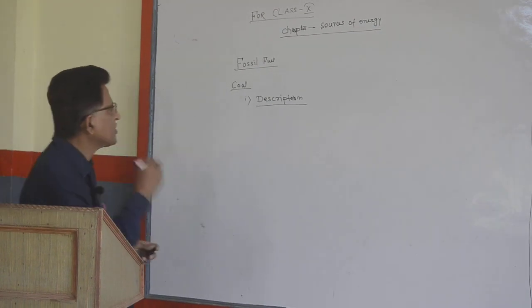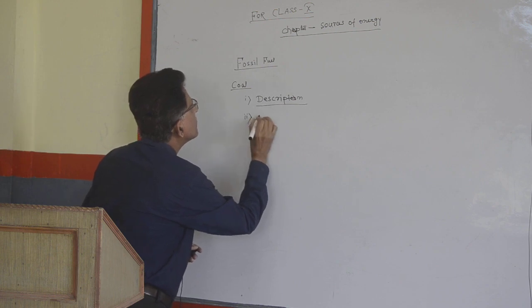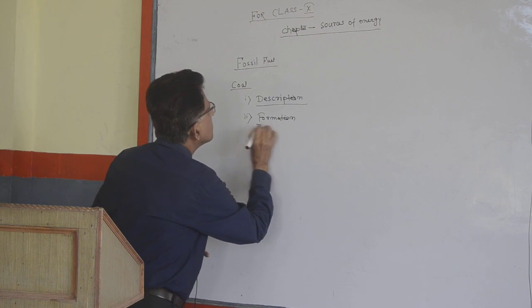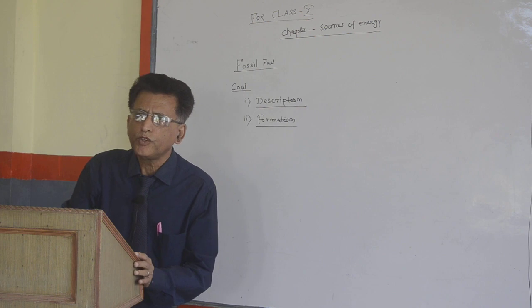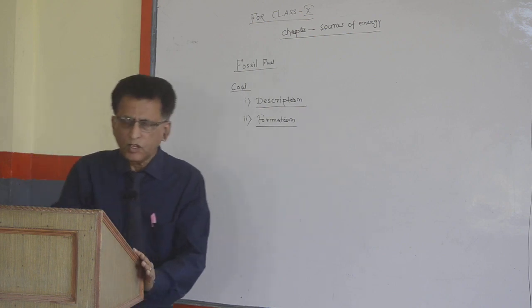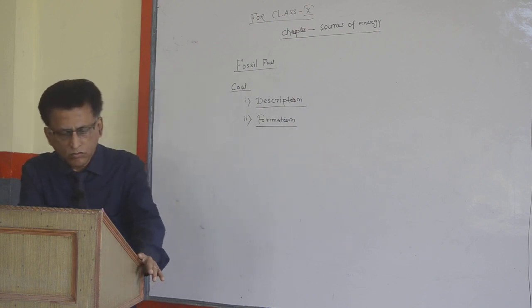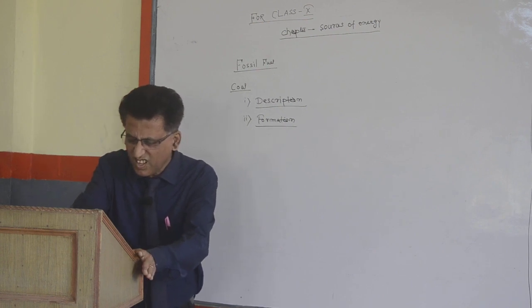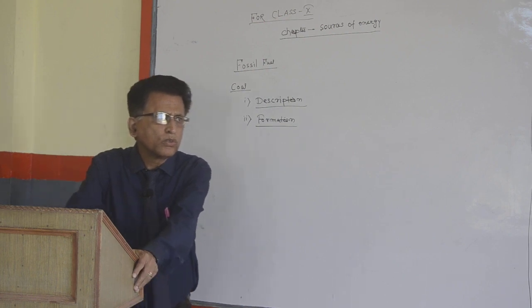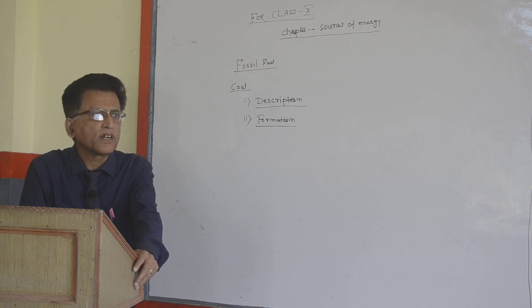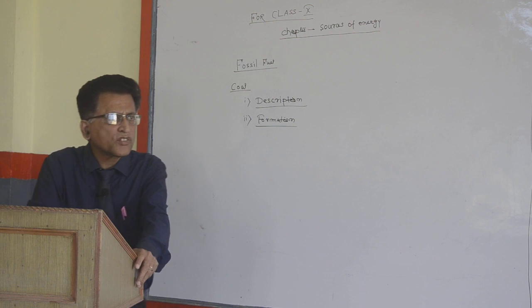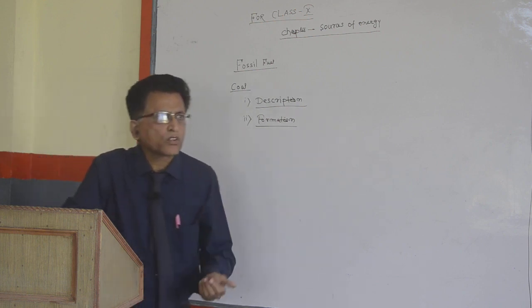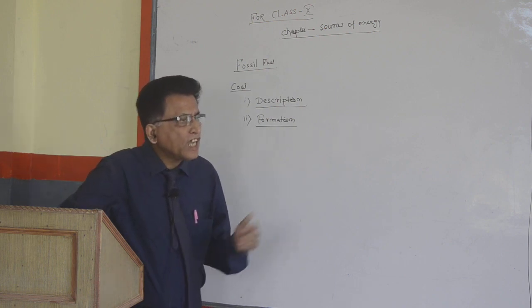Second, Formation. Coal is believed to be formed from fossils of big trees which got buried under the earth's surface about 300 million years ago due to occurrence of earthquakes and eruption of volcanoes.